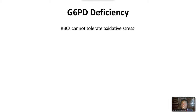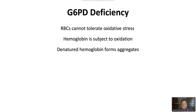Thus, in G6PD deficiency, red blood cells cannot tolerate oxidative stress due to medications, infection, or other toxins. Hemoglobin is subject to oxidation, and the denatured hemoglobin forms aggregates called Heinz bodies. Erythrocytes are trapped by and destroyed in the spleen, resulting in bite cells that are visible on the peripheral blood film.